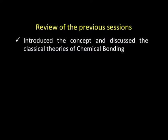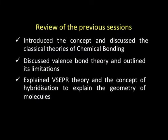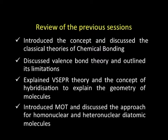Let us begin by recalling what we have done so far. We started by introducing the concept of chemical bonding and discussed the classical theories of chemical bonding. Having done that we moved on to the valence bond theory and outlined its limitations. Valence bond theory basically is a modern theory of chemical bonding. Having done that we took up two different theories: one is VSEPR theory and second the concept of hybridization, which is based on valence bond theory. These two were used to explain the geometry of molecules, and then towards the end we took up the concept of molecular orbital theory and discussed the approach for homonuclear and heteronuclear diatomic molecules.